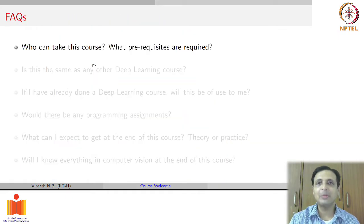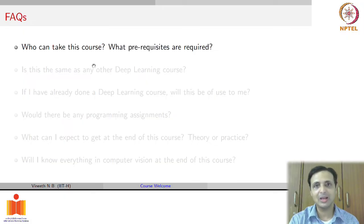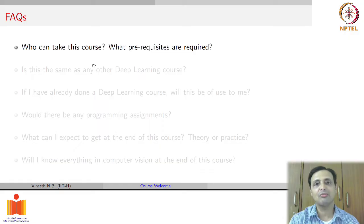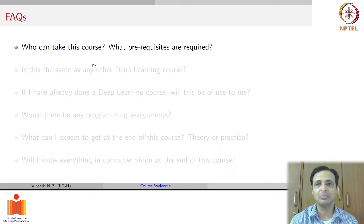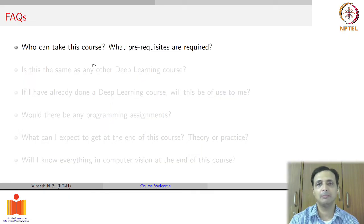Regarding this course, let me describe it using a few FAQs. Firstly, who can take this course, and what prerequisites are required? This course is meant to be an advanced graduate elective or senior undergraduate level course. The prerequisites are that you have a good working knowledge of probability, linear algebra, calculus, and related mathematical topics. The expectation is also that you must have completed a machine learning or deep learning course before, as this course sits on top of existing machine learning or deep learning courses.